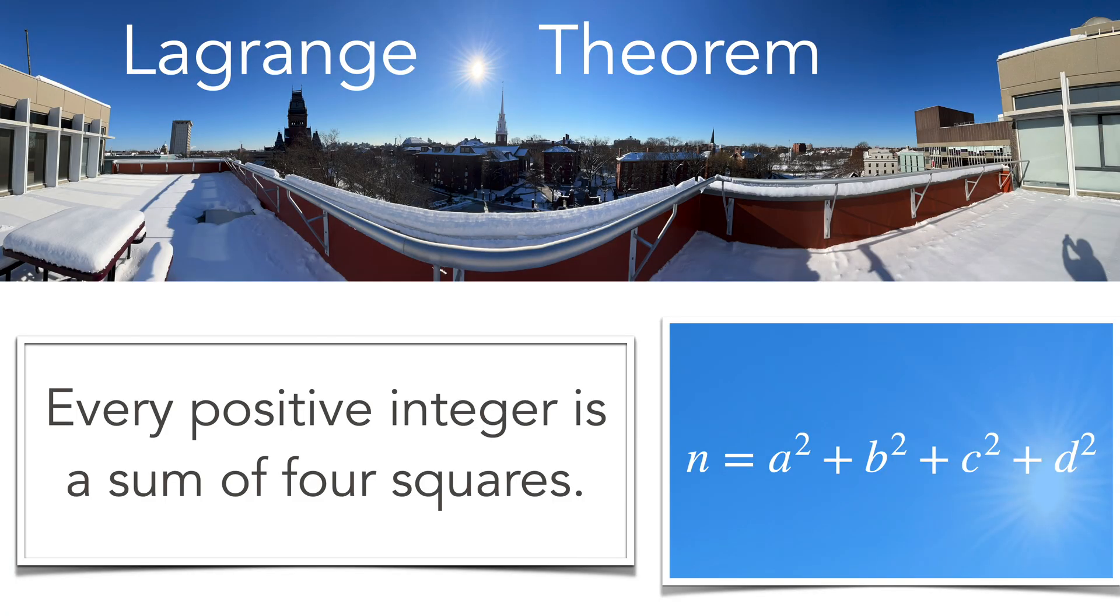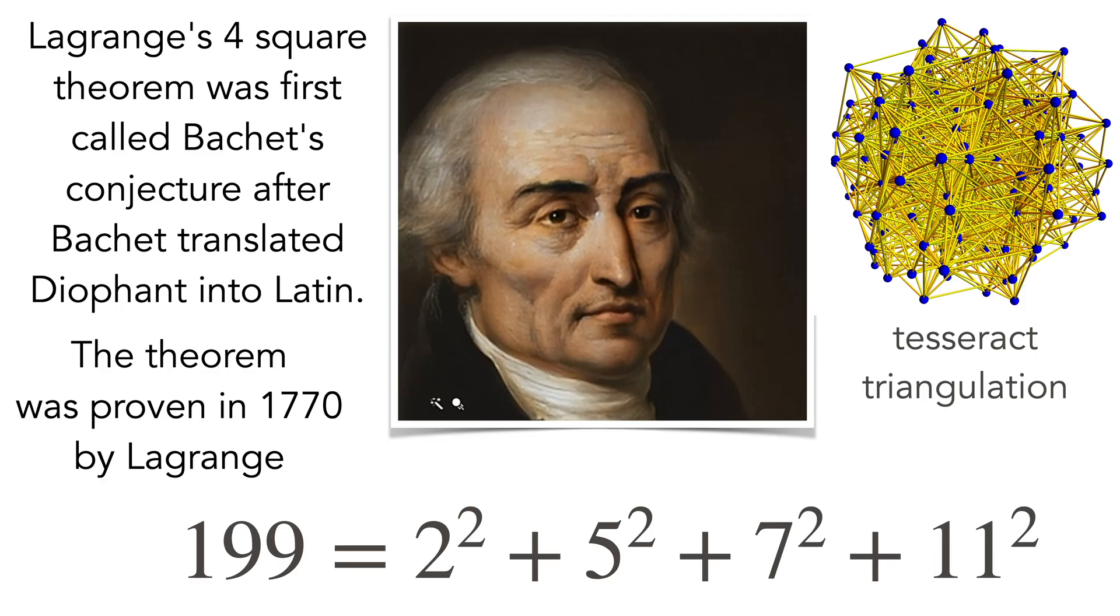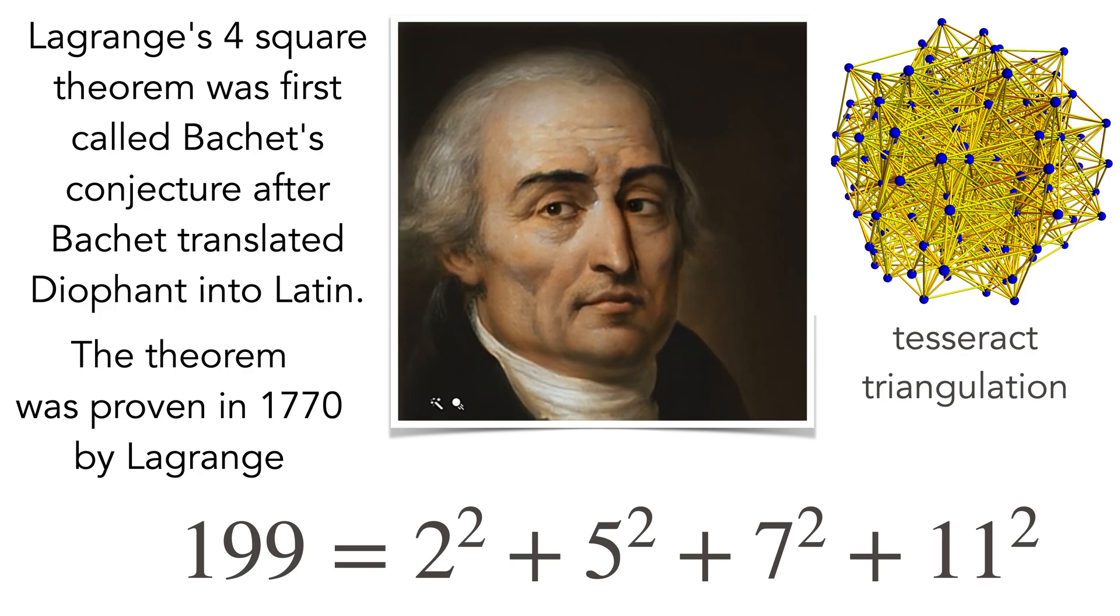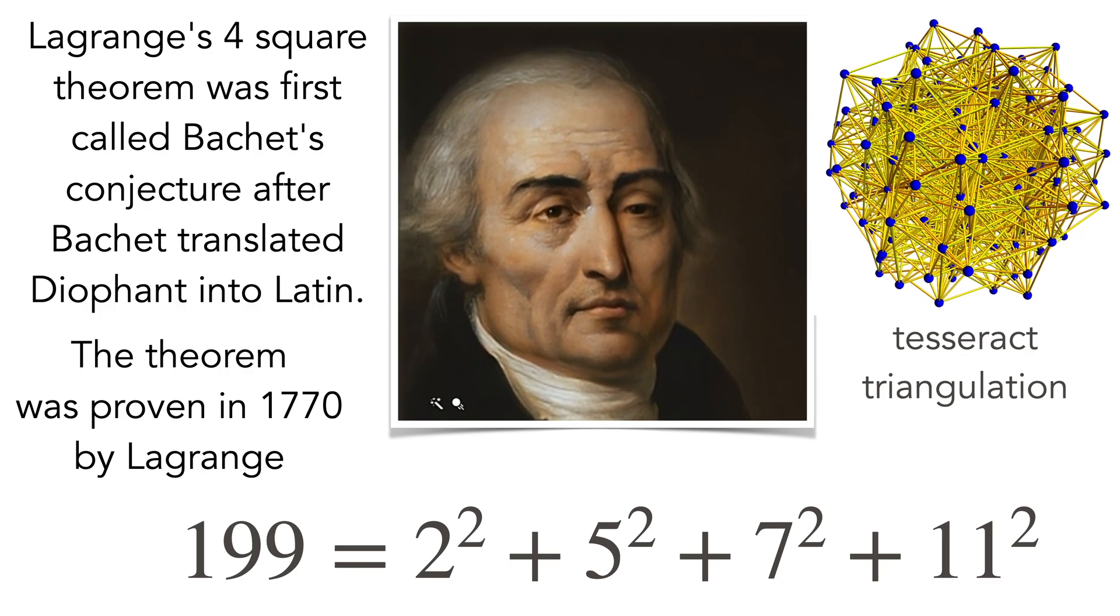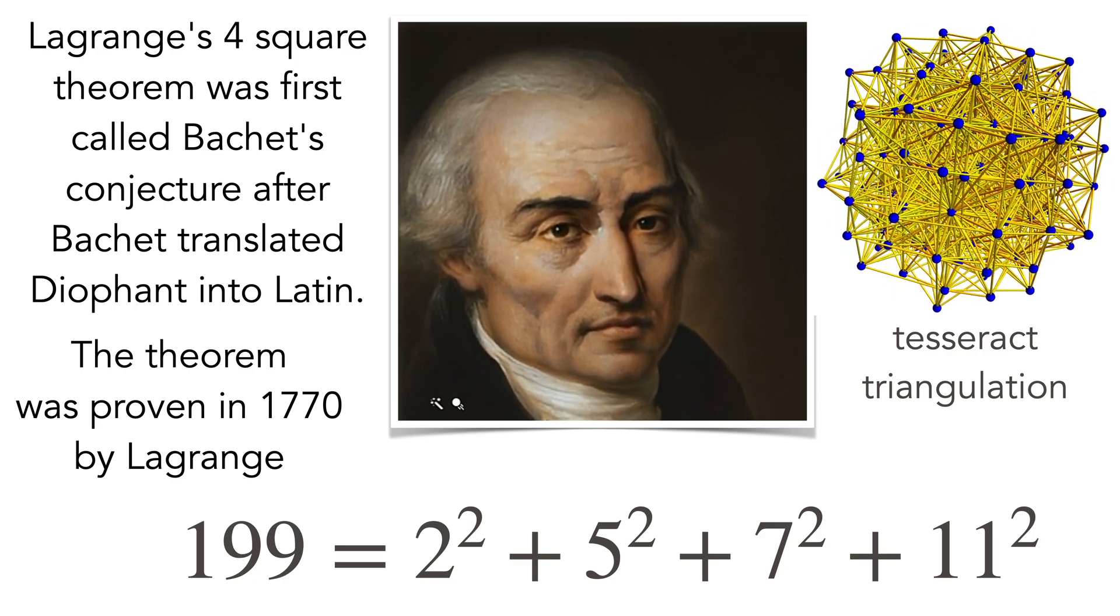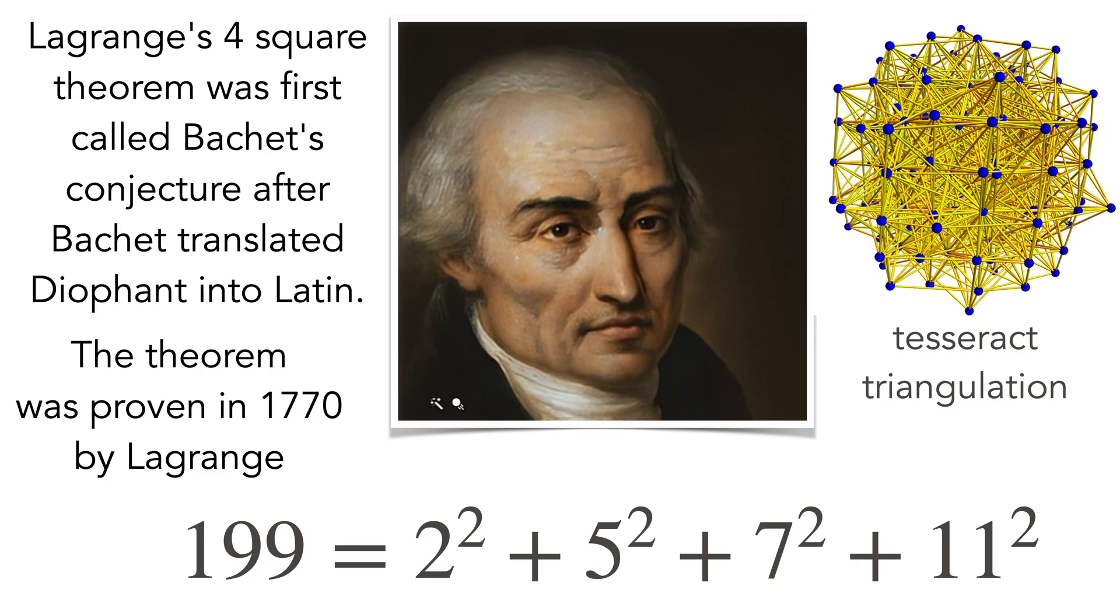Lagrange's theorem, a most astounding theorem, tells that every integer is a sum of 4 squares. This is a theorem in 4 dimensional space. Lagrange has proven this in 1770, like 199 is 2 square plus 5 square plus 7 square plus 11 square. And it's a theorem about 4 dimensional space. So this is a tesseract illustrating 4 dimensional space, a triangulation of a tesseract.